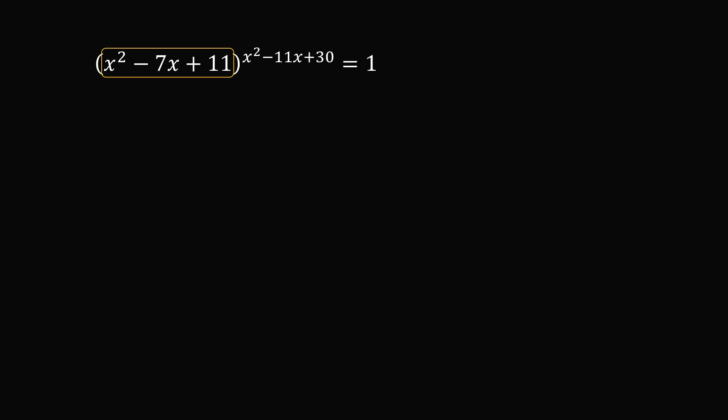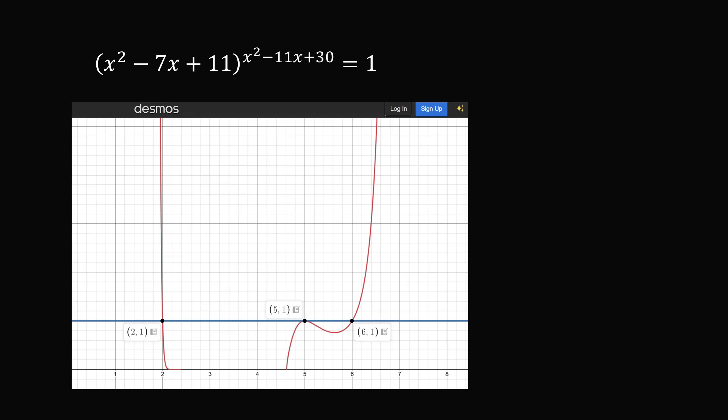Let's take a look at this equation. We have a quadratic in the base, so any value of x is going to change the value of the base. But we also have a quadratic in the exponent, so any value is also going to change the exponent. We have a changing base and a changing exponent, and we want this to be equal to 1. A natural approach would be to graph this equation. According to the graphing calculator Desmos, it would seem there are three solutions: x is equal to 2, x is equal to 5, and x is equal to 6.